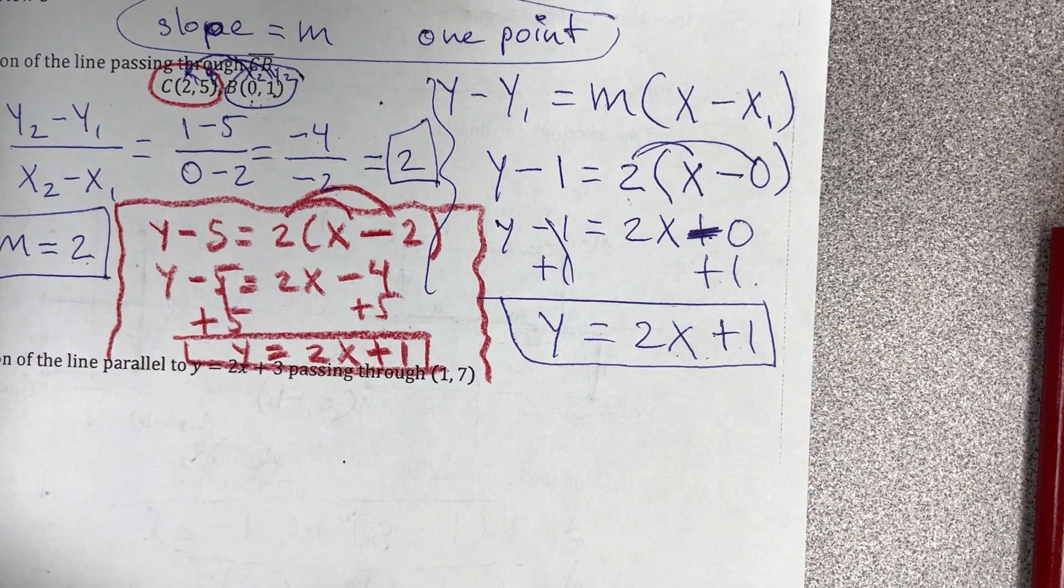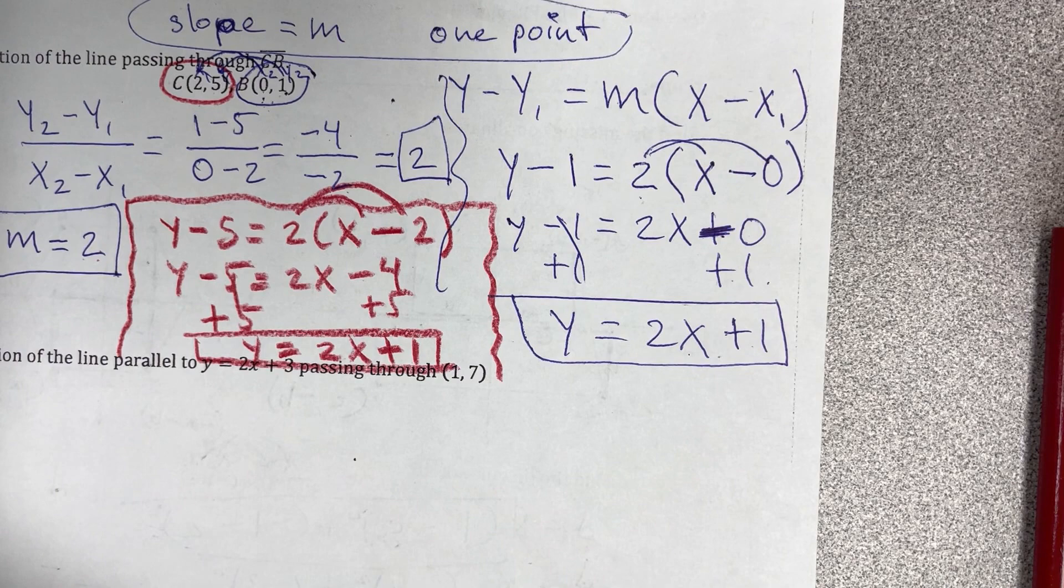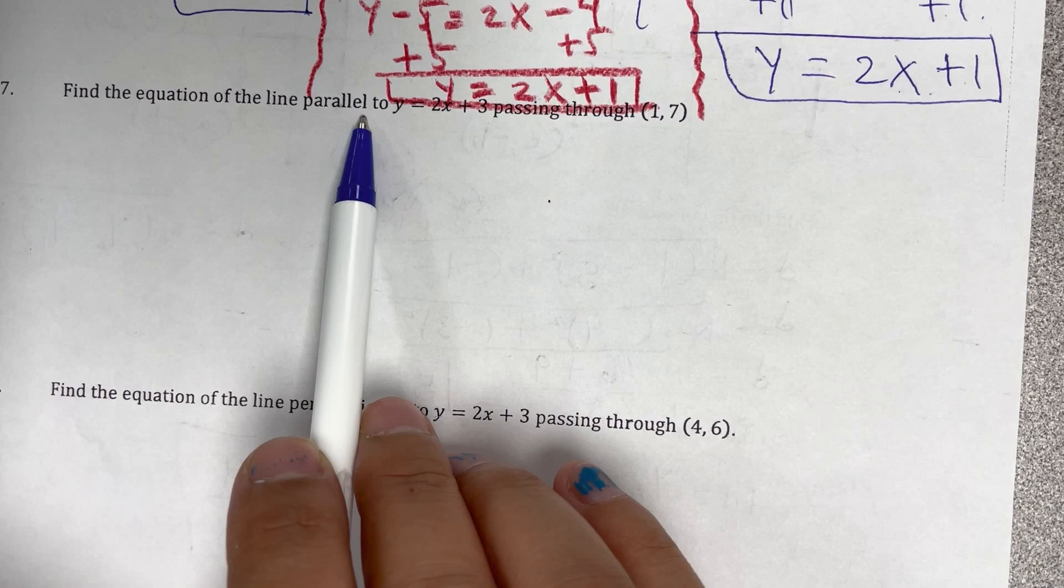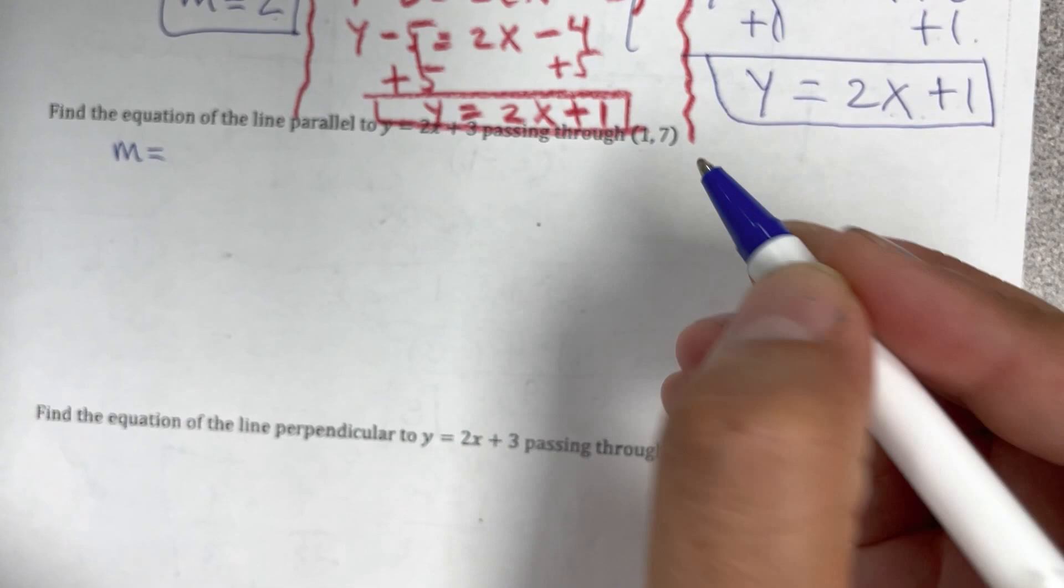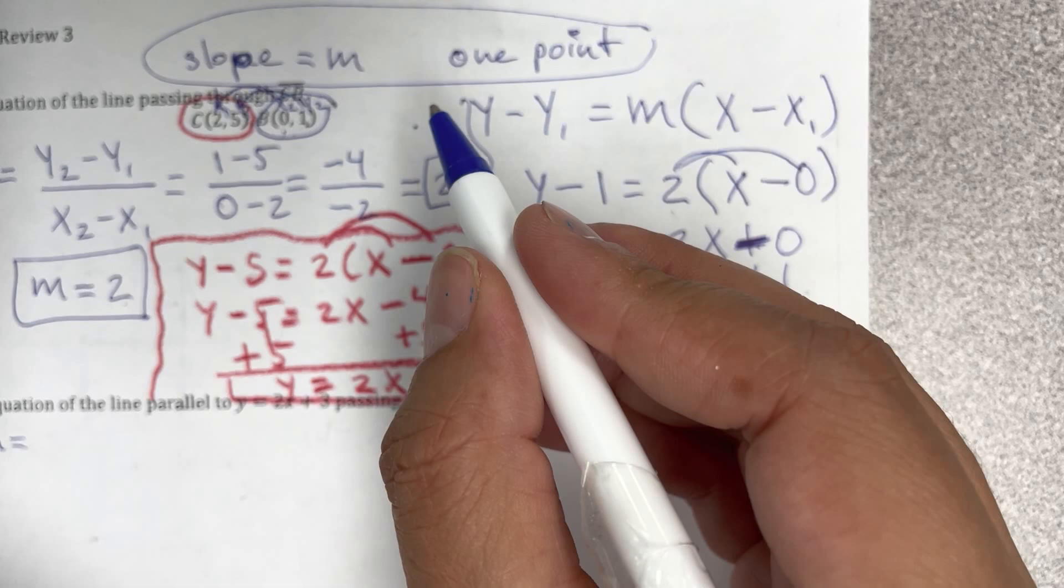So it's going to be y equals 2x plus 1. Si se fijan, you get the same answer. Number 7 says find the equation of the line parallel to y equals 2x plus 3 passing through point 1, 7. So aquí no tenemos el slope, pero sí tenemos un punto. Y recuerden que les dije arriba que necesitamos el slope y un punto.